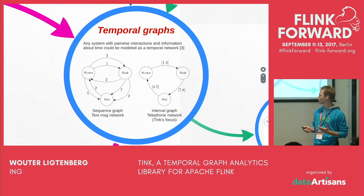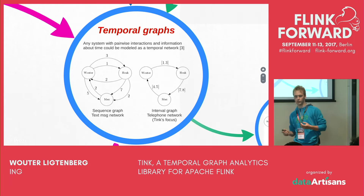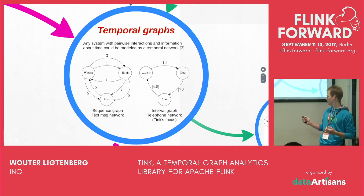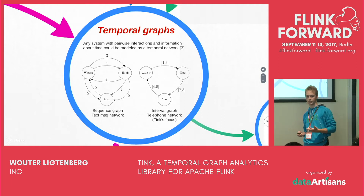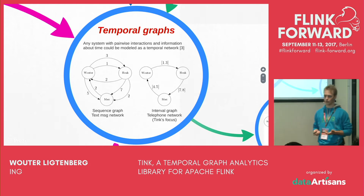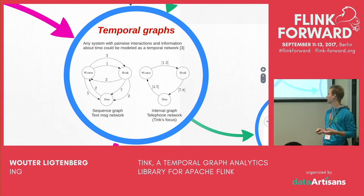A temporal graph is a normal graph where the edges have time labels on them. I make two different temporal graphs: a sequence graph and an interval graph. With the sequence graph, you can see it as a text message network — I send a text message and it happens at one instance of time. With an interval graph, you can think of a telephone network, where every edge starts and ends at a specific point, and during that time something is happening.